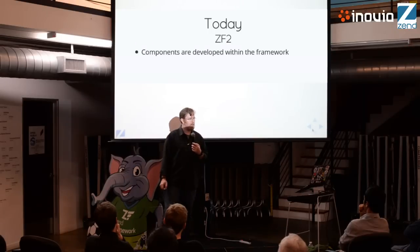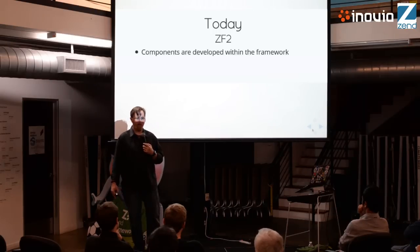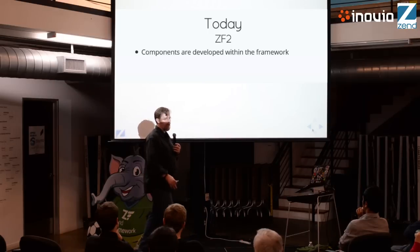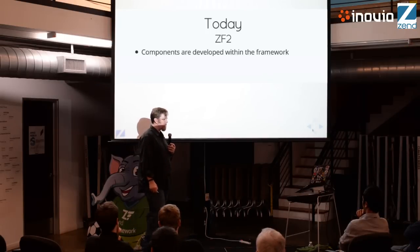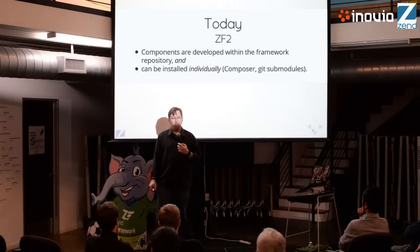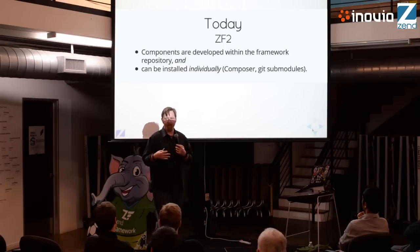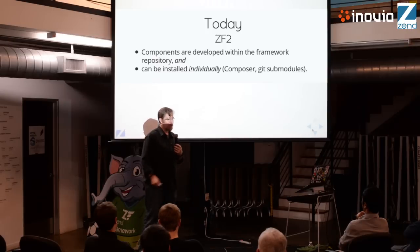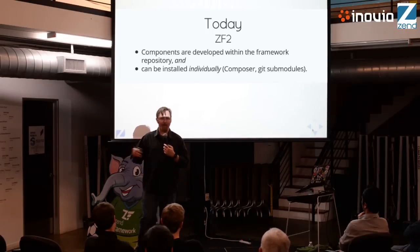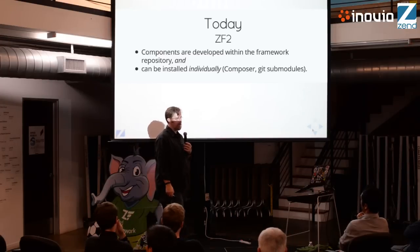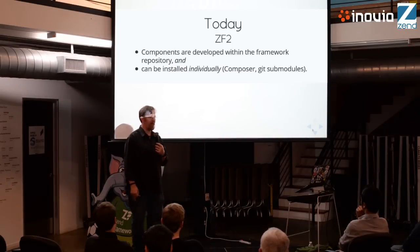Things are a little bit better in Zend Framework 2. We're still developing the components as part of the repository, which means they all jump version at the same time even if there are no changes. Zend Paginator typically doesn't need changes from version to version, yet it's getting bumped every version. There's also a semi-manual, semi-automatic process to sync changes after tagging the main repository, which is very problematic — we actually ended up dropping history and just tagging based on version. But you can install them individually, which is a nice improvement over Zend Framework 1.